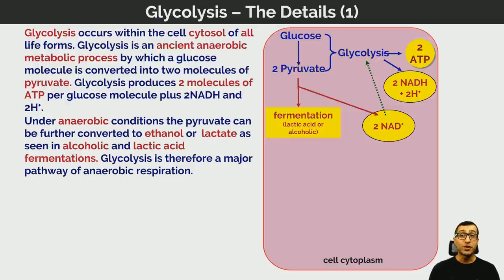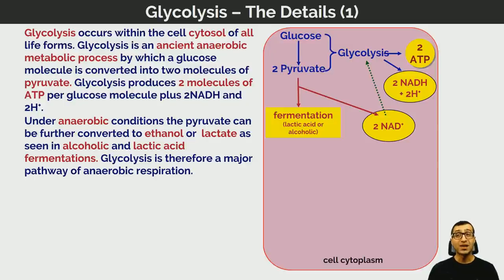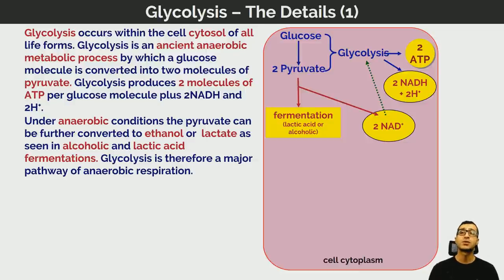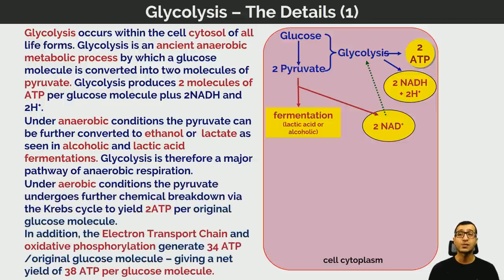Under anaerobic conditions, when oxygen is not available in eukaryotic cells, pyruvate can be further converted into either ethanol (in plants) or lactate (in animal cells). These are seen in alcoholic and lactic acid fermentations. So glycolysis is also a major pathway for anaerobic respiration.